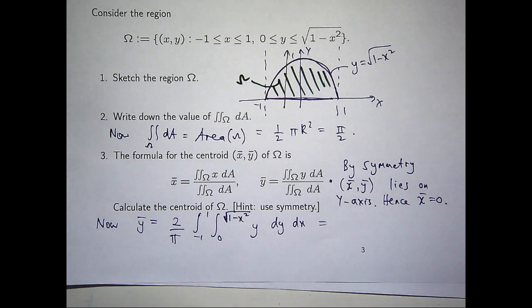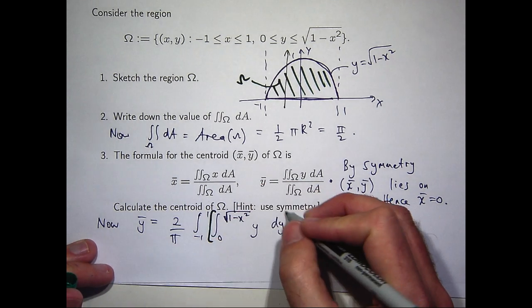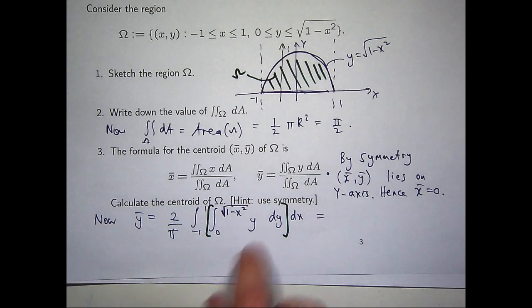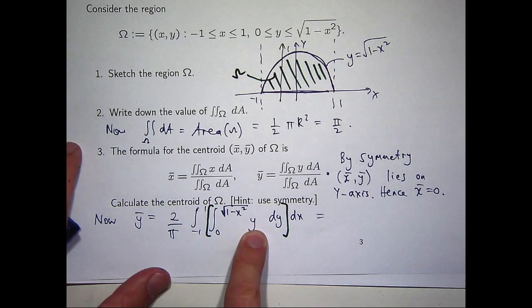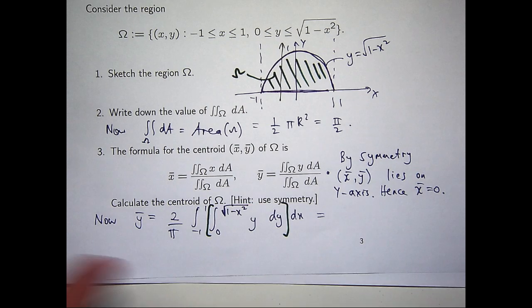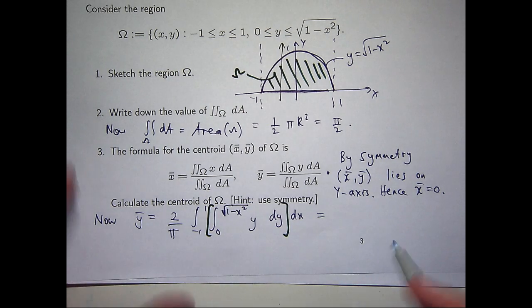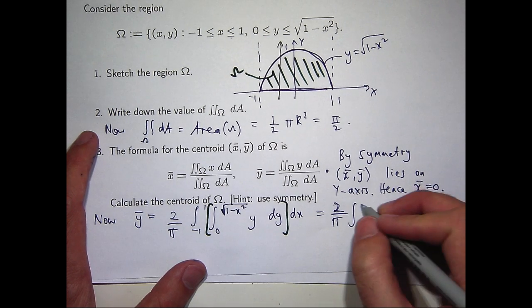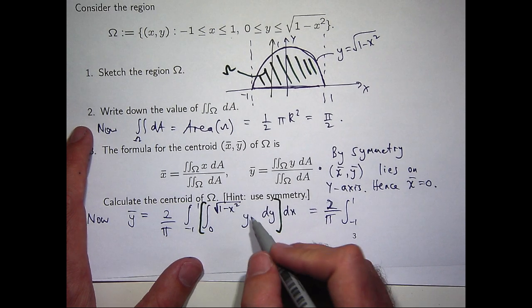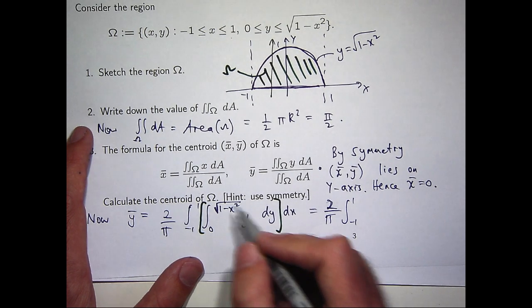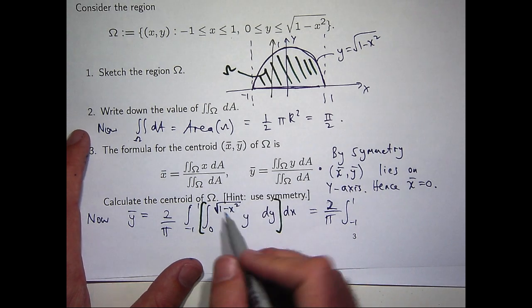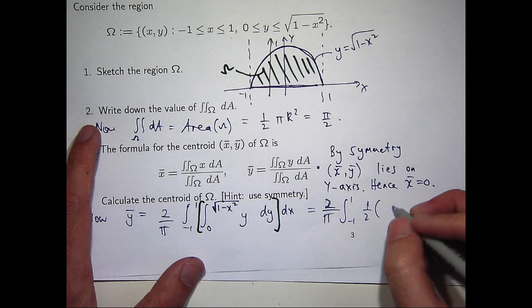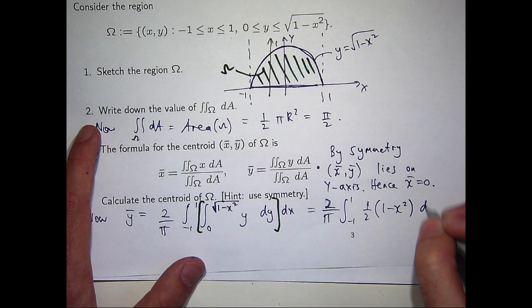Okay, so you do the inside integral first. So integrate everything here with respect to y, holding x fixed, so this will become a half y squared. Now, notice, if it's a half y squared, when you plug in that, the square root sign is going to disappear. So that seems acceptable to me. We don't, you know, you don't need polar coordinates here. So it's going to become a half y squared, so when I sub in the first one, I'll get a half bracket 1 minus x squared, and when I sub in that, I'll get 0. So I'll get something like this.